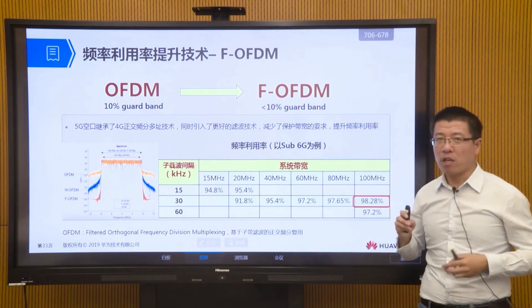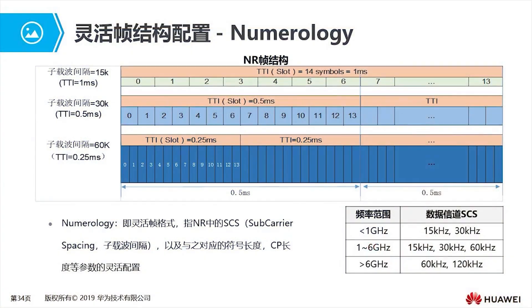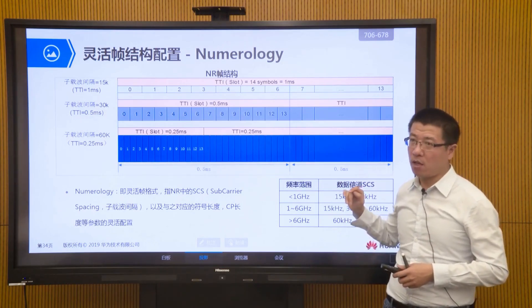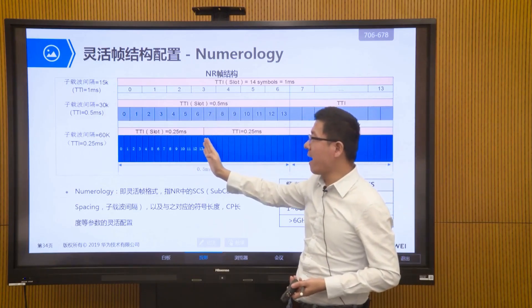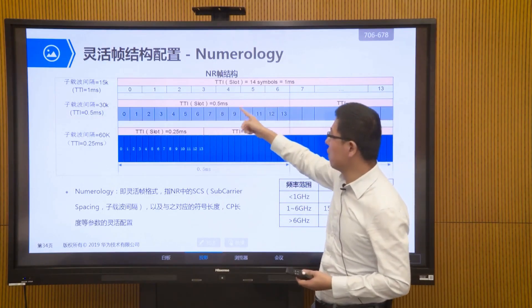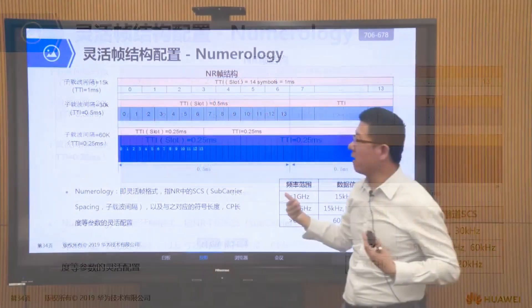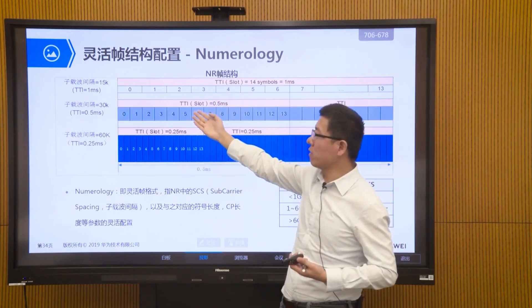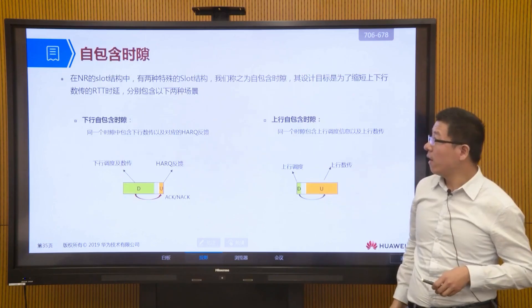By lowering the guard band, F-OFDM supports higher rates within limited bandwidth. Another key technology is the flexible frame structure. Compared to 4G's relatively fixed frame structure, 5G's frame structure is more flexible in order to adapt to different business scenarios. The frame structure relates to the time domain — different frame structures have different TTI or time slot sizes: some are 1 ms, some 0.5 ms, some 0.25 ms. This flexibly adapts to business scenarios requiring low latency or ordinary services with 30 kHz subcarrier spacing.